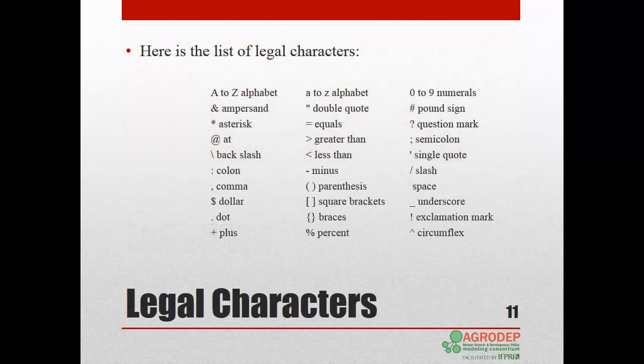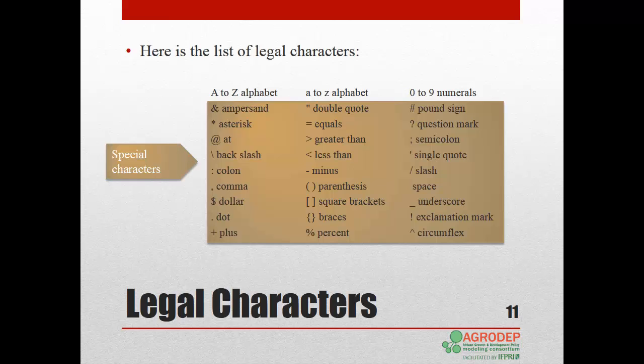Next, we cover some rules about the GAMS language. Here is the list of characters allowed in GAMS. The alphabet A to Z in capital or lowercase format, digit from 0 to 9, and special characters, which in this slide are enclosed in the gold square. You can also find a complete list in table 3.2 of the user's guide.